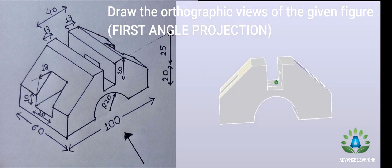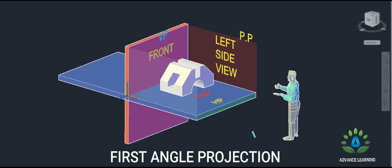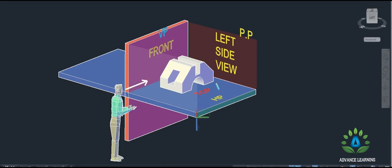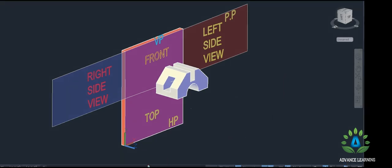We have given a pictorial view of orthographic views in the first angle projection. In the first angle projection, we observe the object in the first quadrant. The object is between the observer and the projection plane. This is the front view — the object is in the left side view of this plane. The observer is in the top view. We open the 2D slide.